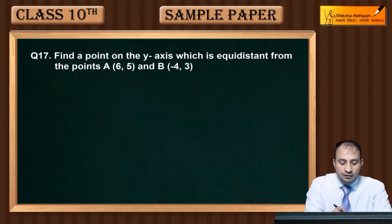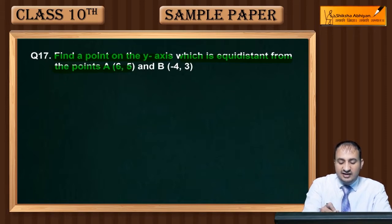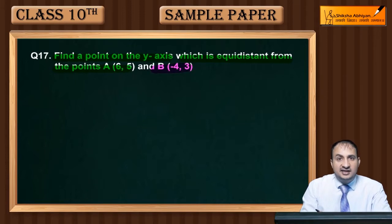Question 17 is, find a point on y-axis which is equal distance from point A (6,5) and point B (-4,3). So we need to find a point on y-axis which is equidistant from A and B.